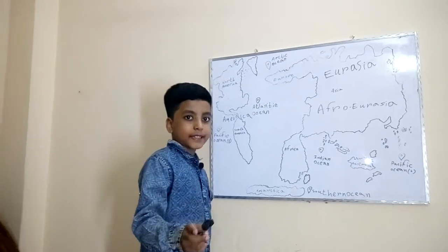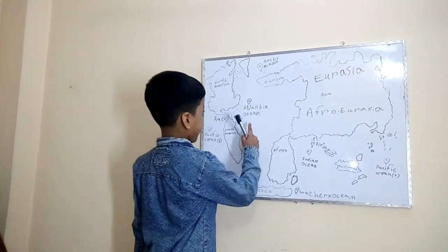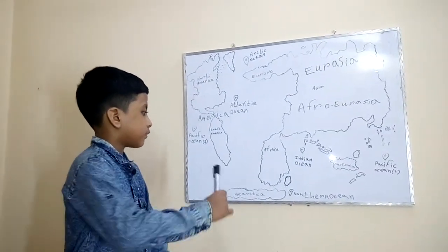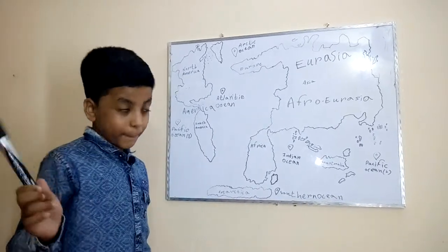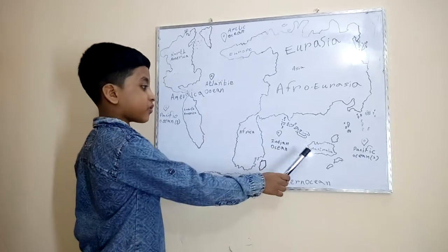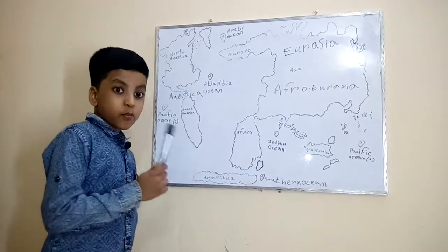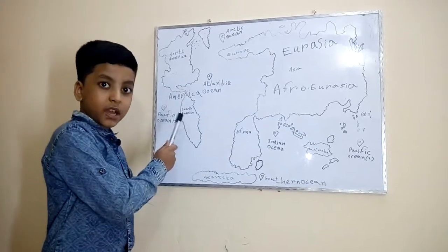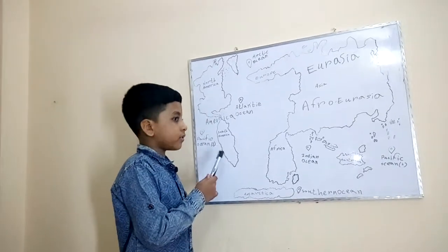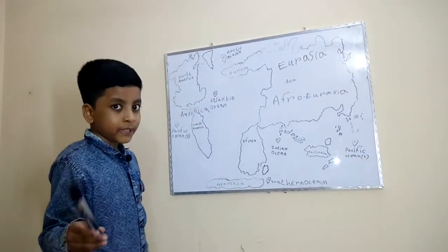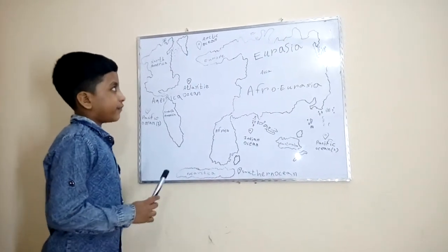Antarctica is also surrounded by the Pacific Ocean and the Atlantic Ocean. Moving on to South America — Brazil is the biggest country in South America; in fact, it's bigger than Australia. If you compare Brazil and Australia, you see Brazil is bigger, and Brazil is more than half the size of all of South America. The next continent is North America, and it's the fifth smallest continent.